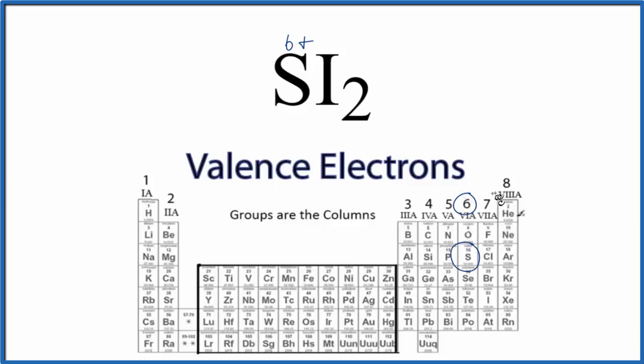Then for iodine, that's in group 7a, also called 17, it has 7 valence electrons. There's your iodine.